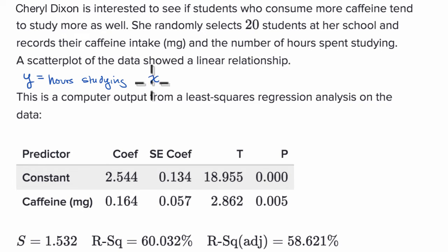And then let's say x is what we think explains the hour studying, or is one of the things that explains the hour studying. And this is the amount of caffeine ingested. So this is caffeine consumed in milligrams.